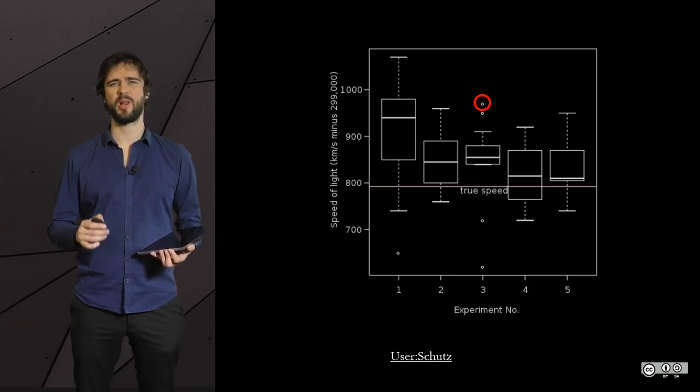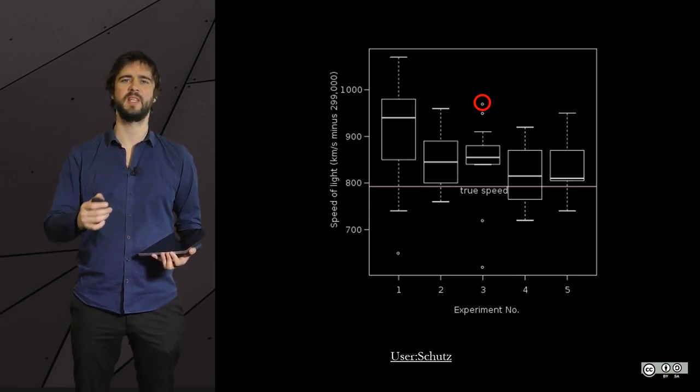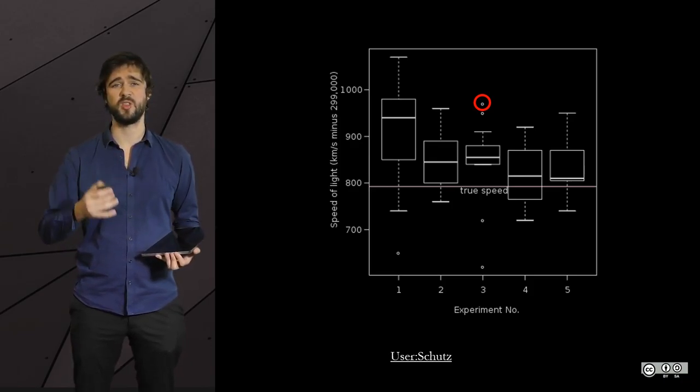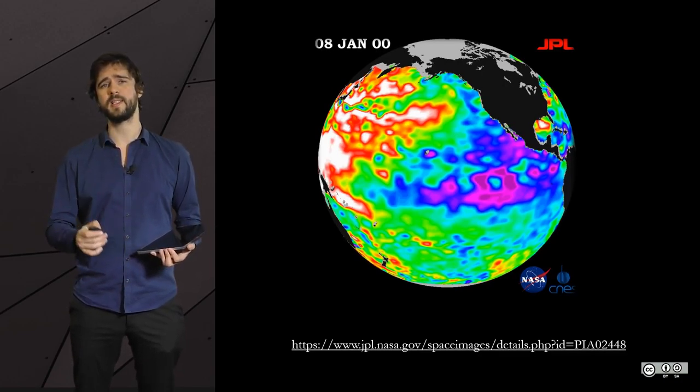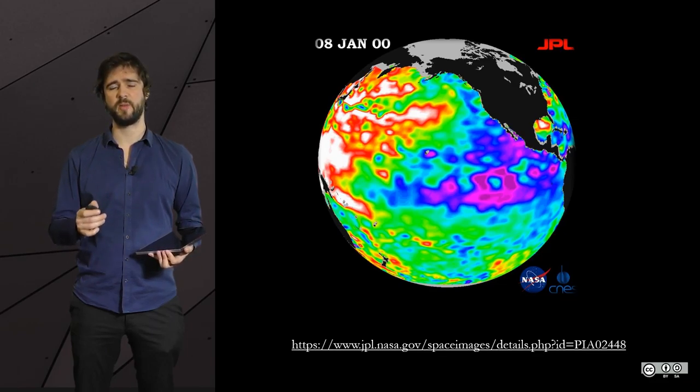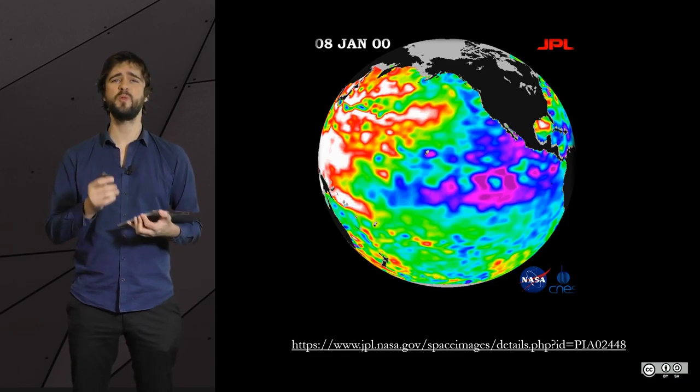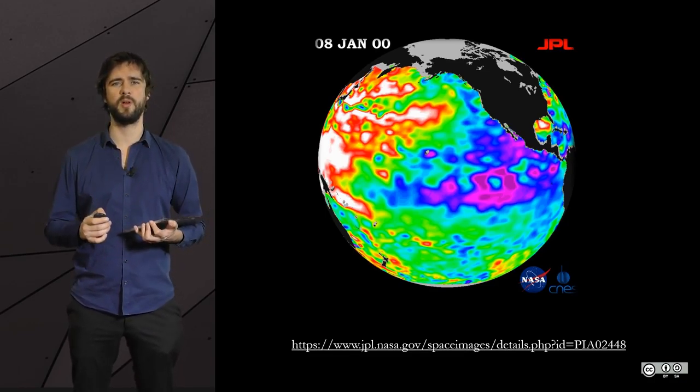For instance, a classic trick consists, when you go against conventions, to change the normal colors. Here is a map showing water temperature in the Pacific Ocean. We would typically represent warmer water in red and colder water in blue. If you change this convention, even if you say so in the legend, it is a bad way to represent data.